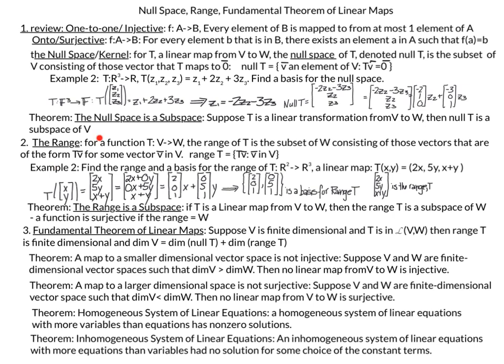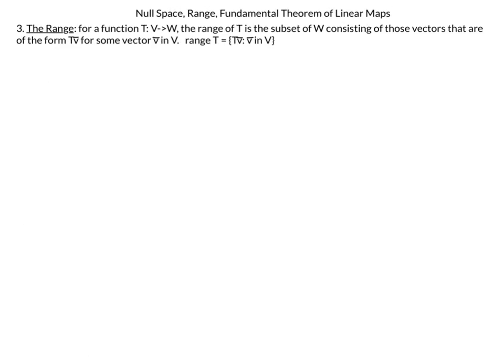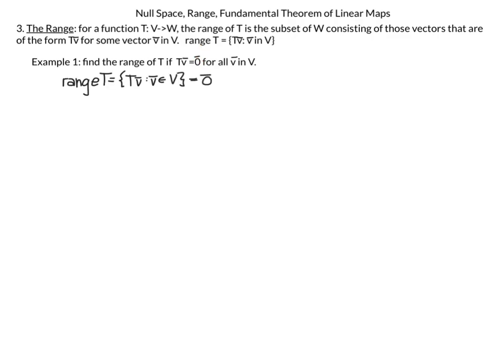We are ready to talk about the range. For a function T from V to W, the range of T is the subset of W consisting of vectors of the form T(v) for some vector v in V. Our first example: if T of v equals 0 for all vectors in V, then since every T(v) equals 0, the range is equal to the zero vector.